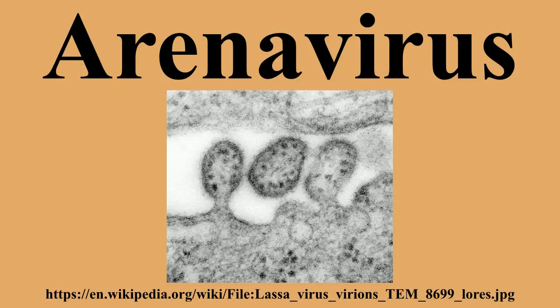Arenaviruses have a segmented RNA genome that consists of two single-stranded ambi-sense RNAs. As with all negative-sense RNA viruses, the genomic RNA alone is not infectious and the viral replication machinery is required to initiate infection within a host cell. Genomic-sense RNA packaged into the arenavirus virion is designated negative-sense RNA and must first be copied into a positive-sense mRNA in order to produce viral protein. The two RNA segments are denoted small and large and code for four viral proteins in a unique ambi-sense coding strategy. Each RNA segment codes for two viral proteins in opposite orientation such that the negative-sense RNA genome serves as the template for transcription of a single mRNA and the positive-sense copy of the RNA genome templates a second mRNA.